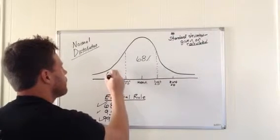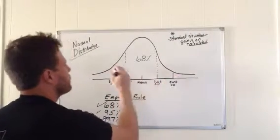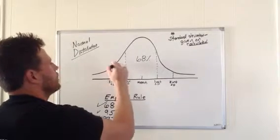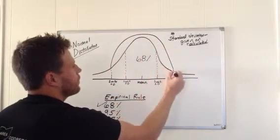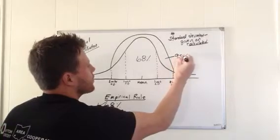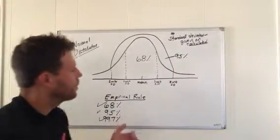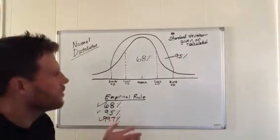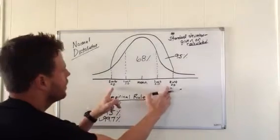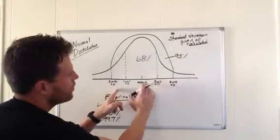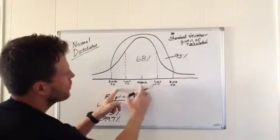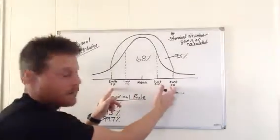So now this represents, I can draw this around like this, this represents 95% of the data set, saying that 95% of the data set will fall between two units of standard deviation to the right of the mean and two to the left. That's what we see here.